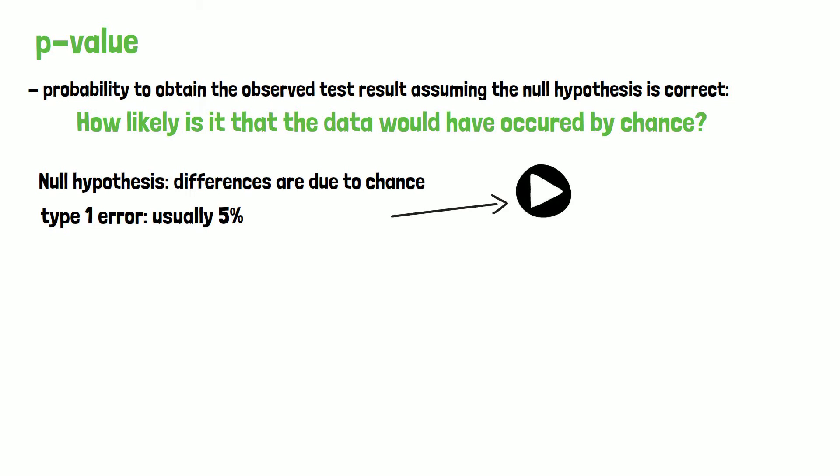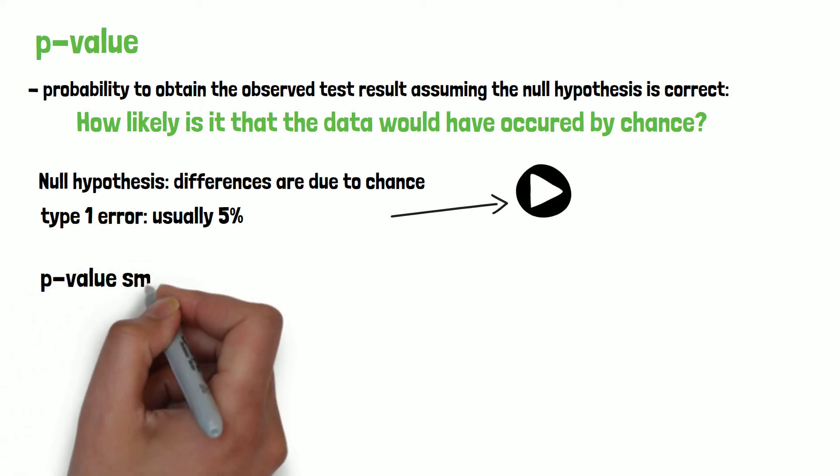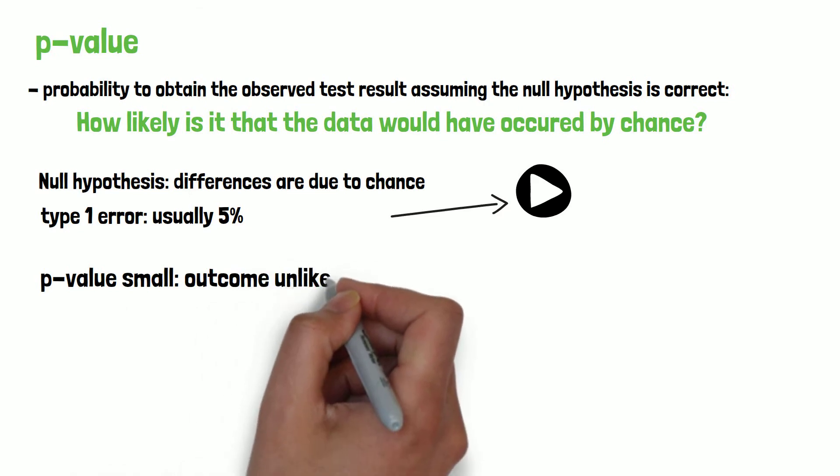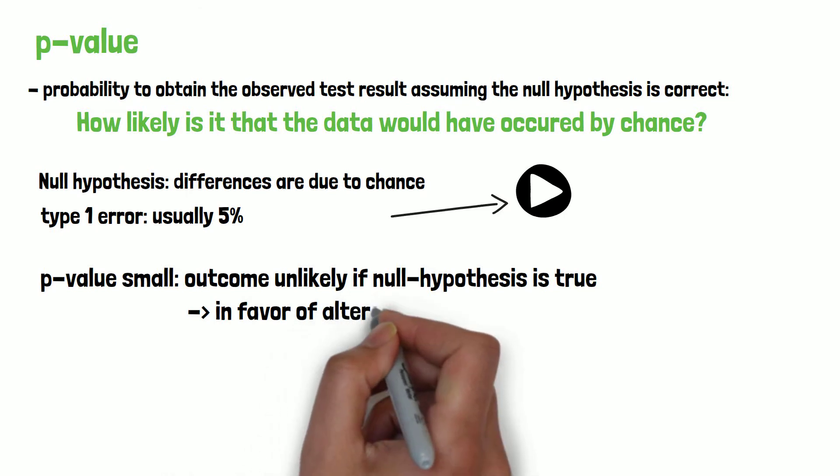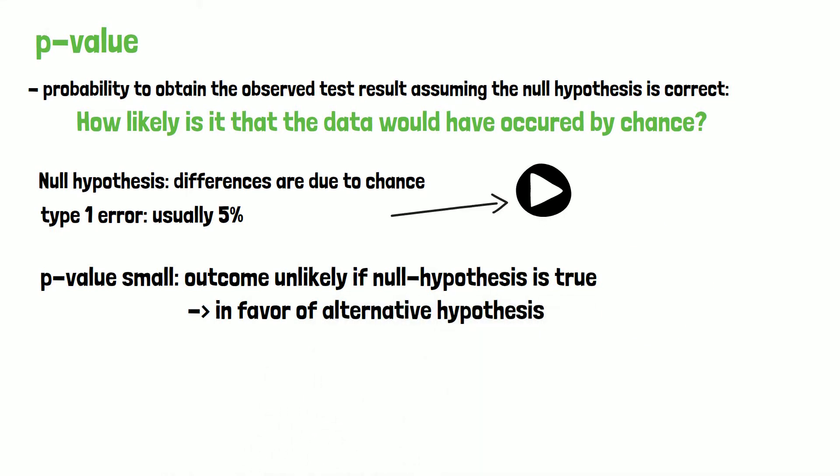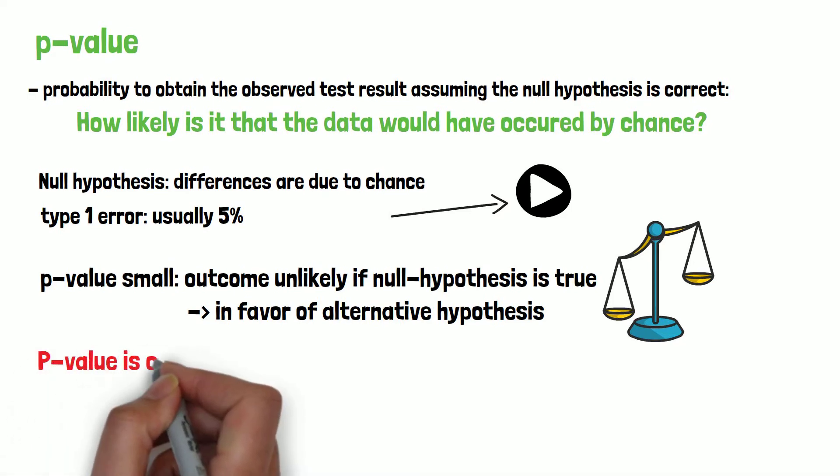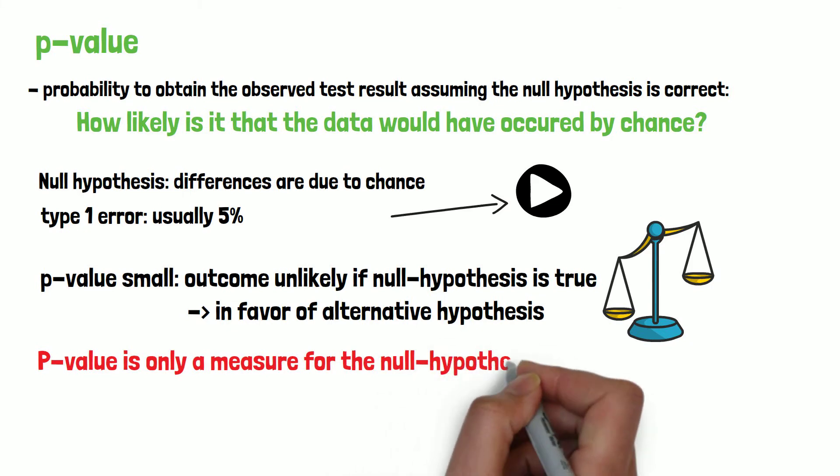A small p-value indicates that it is very unlikely that the outcome would have been observed if the null hypothesis was true. In this case the decision made would be in favor of the alternative hypothesis which would be more likely to explain the observed data. But it is important to mention that the p-value is only a measure for the null hypothesis and not for the alternative hypothesis.